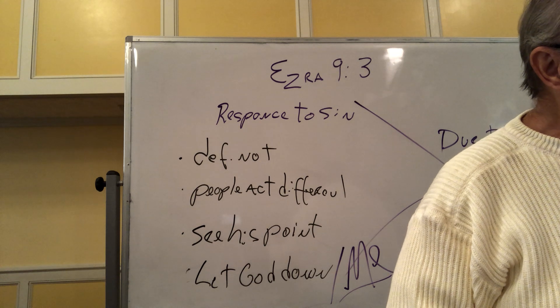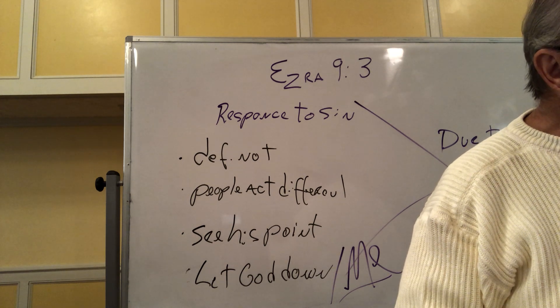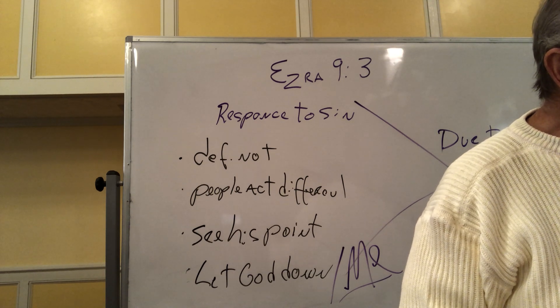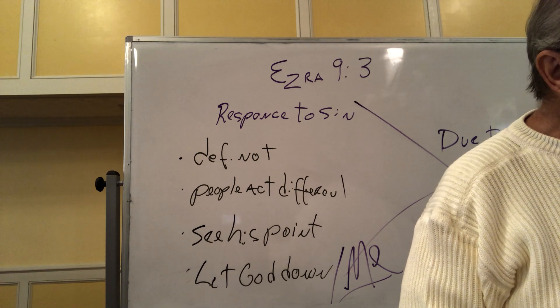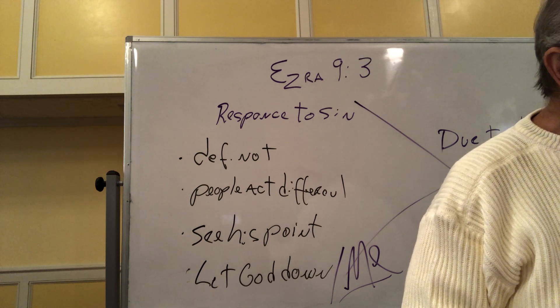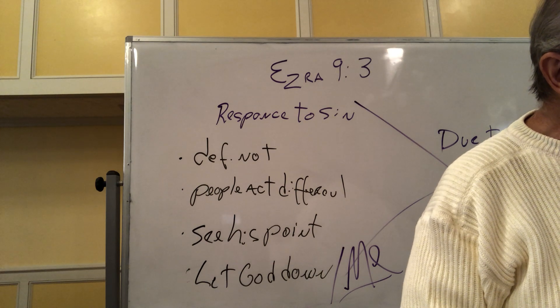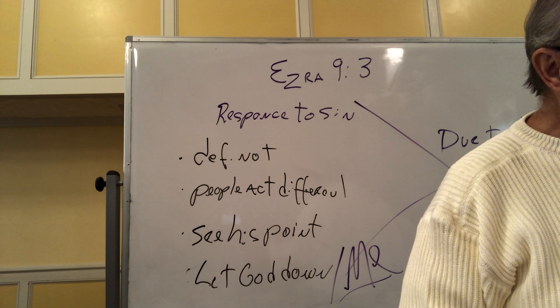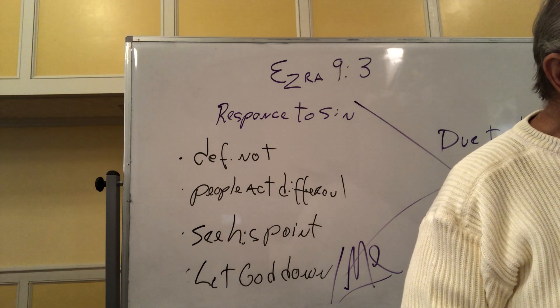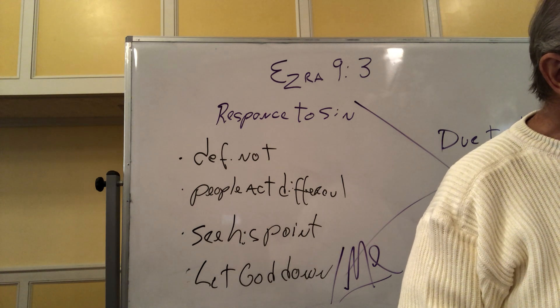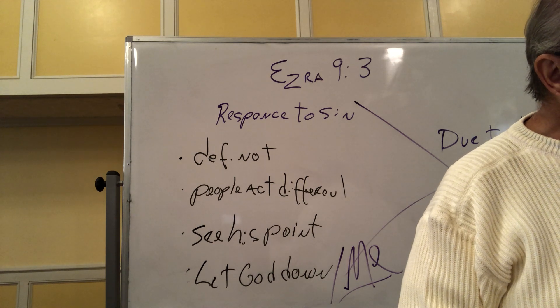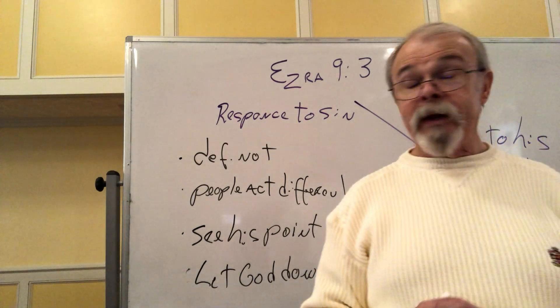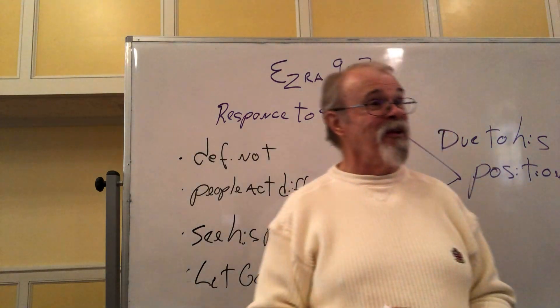And yet, our God, you have punished us less than our sins have deserved and have given us a remnant like this. Shall we again break your commands and intermarry with the peoples who commit such detestable practices? Would you not be angry enough with us to destroy us, leaving us no remnant or survival? Oh, Lord, our God, you are righteous. We are left this day as a remnant. Here we are before you in our guilt, though because of it, not one of us can stand in your presence. I mean, that's powerful. That's powerful as you read that. But let's look at his prayer.